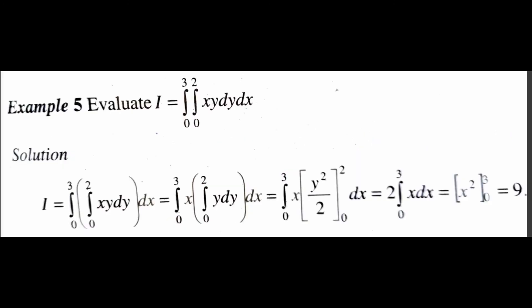Our last question: evaluate I = integral 0 to 3, integral 0 to 2 of xy dy dx. Factoring out x: integral 0 to 3 of x · (integral 0 to 2 of y dy) dx, which equals integral 0 to 3 of x · [y²/2] from 0 to 2 dx. That simplifies to 2 · integral 0 to 3 of x dx, which equals [x²] from 0 to 3. The final answer is 9.